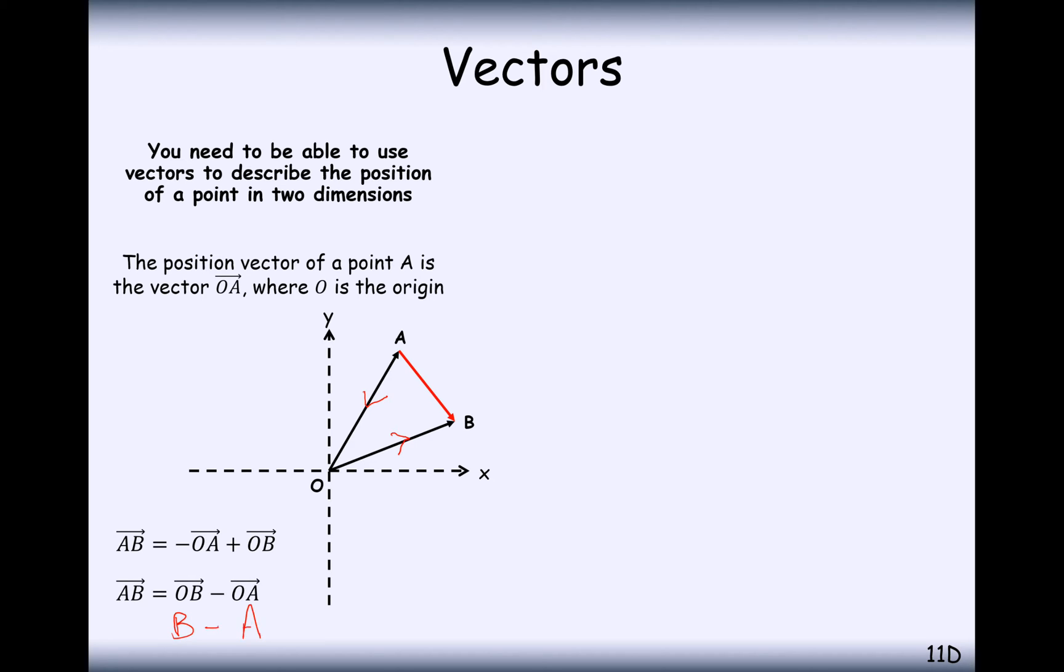This is how I would remember it. If you want to get from a coordinate A to a coordinate B in that direction from A to B, then you've got to do the coordinate for B take away the coordinate for A, and that works in general. It's also shown by vectors here. If you want to go from A to B, you have to go back along A and forward along B.